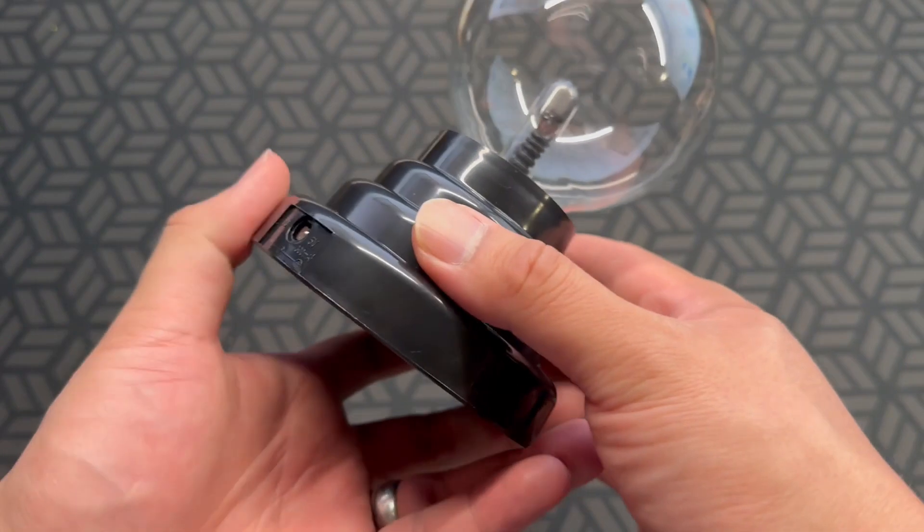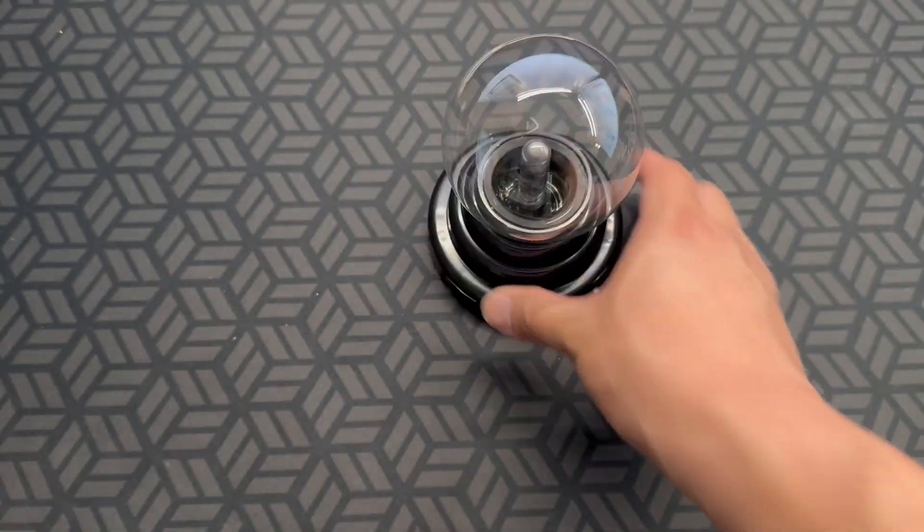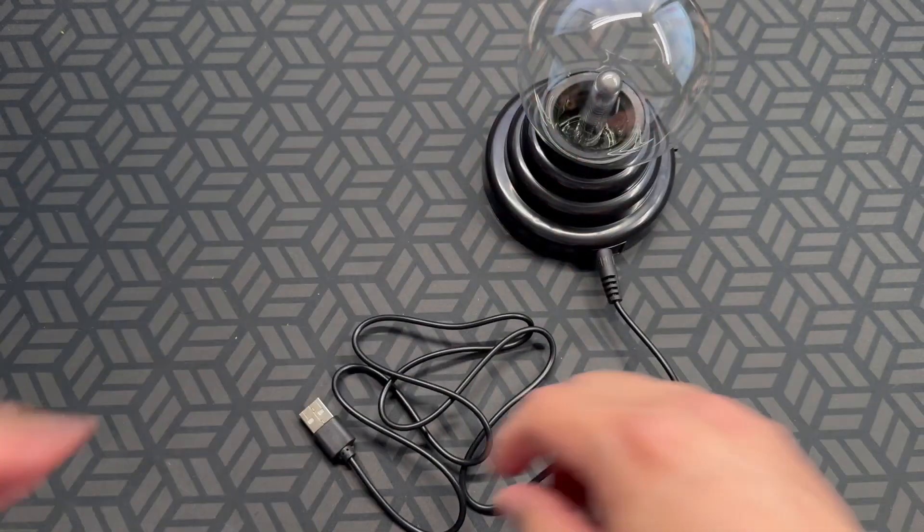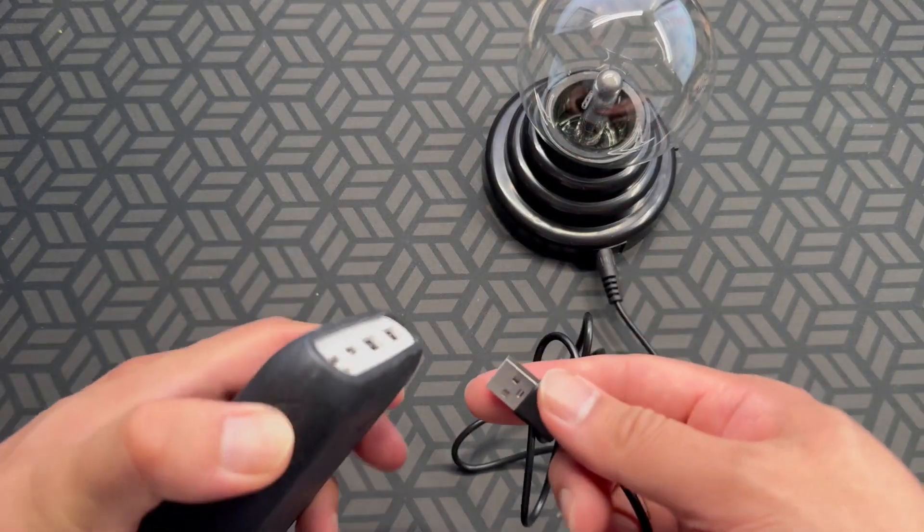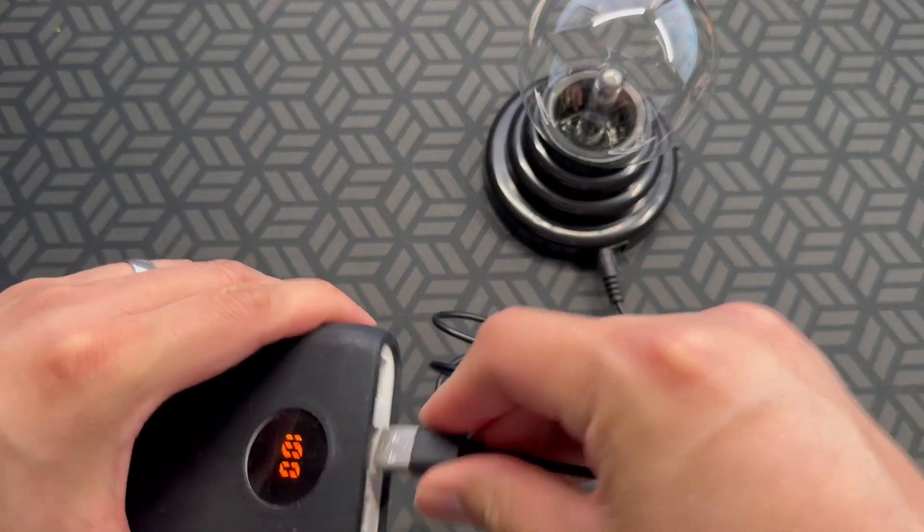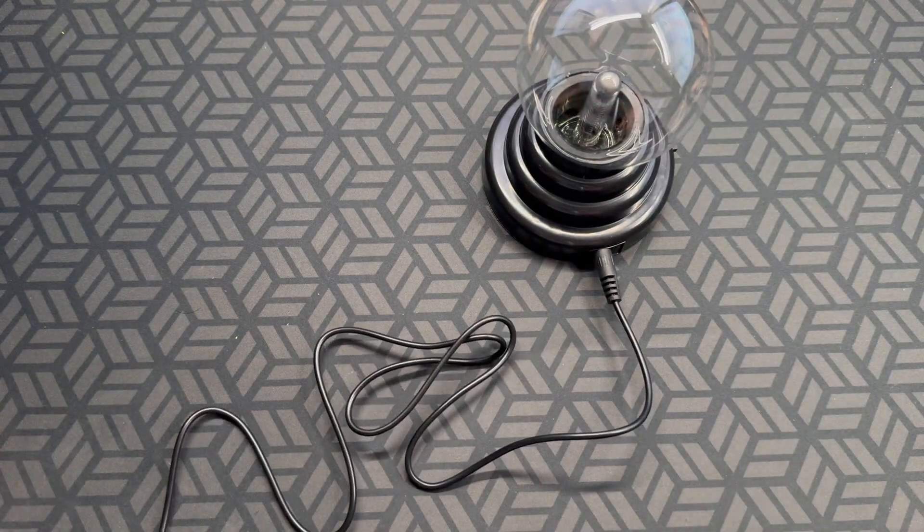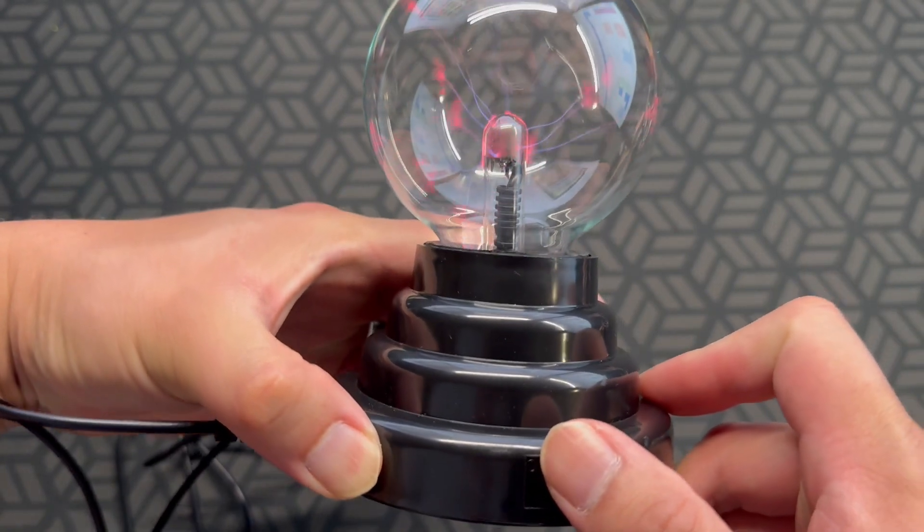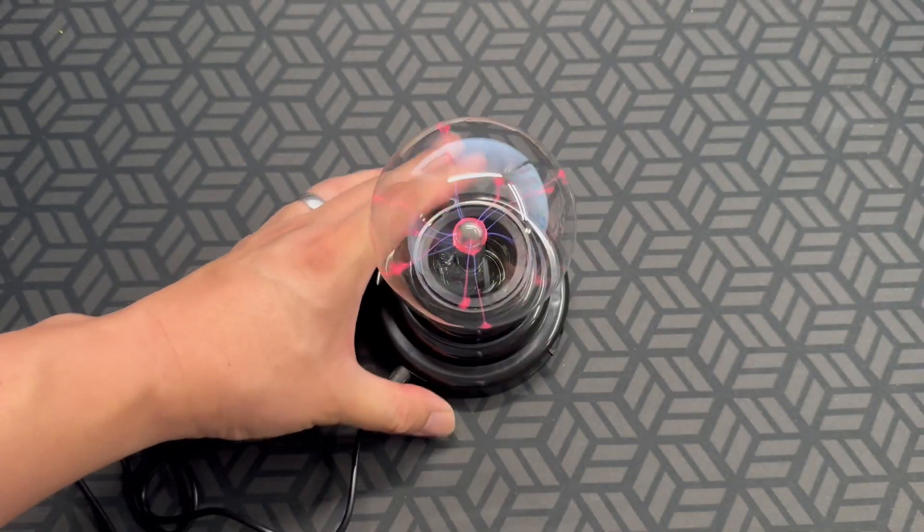I'll test out the USB power. So there's the plug for it. Plug it in. And I've got a power bank here, handy. So let's plug that in. And let's turn it to on. There we go. So it's working right away.